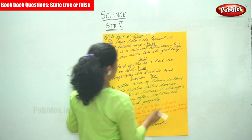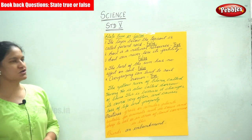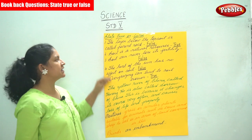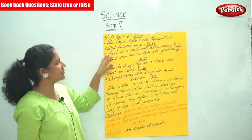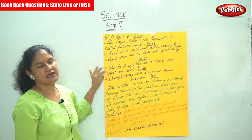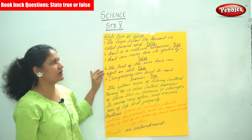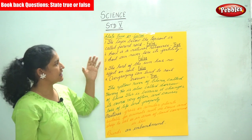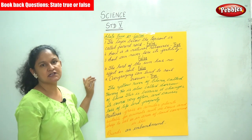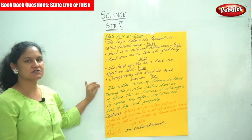Coming back to review: the layer that is found below the topsoil is called the parent rock — it is false. The layer below the topsoil is called the subsoil, not the parent rock.